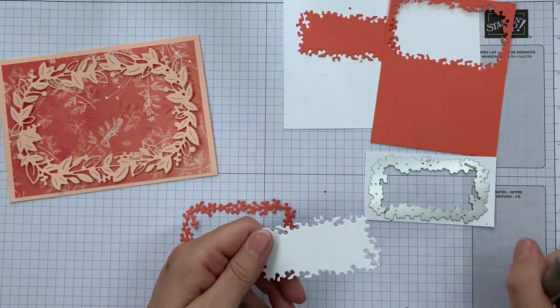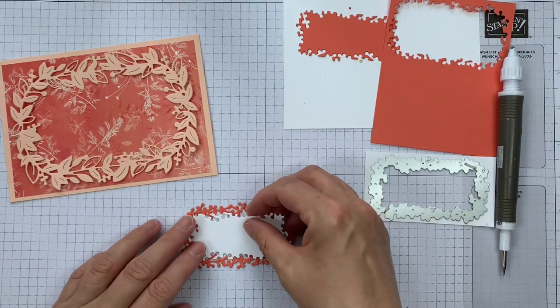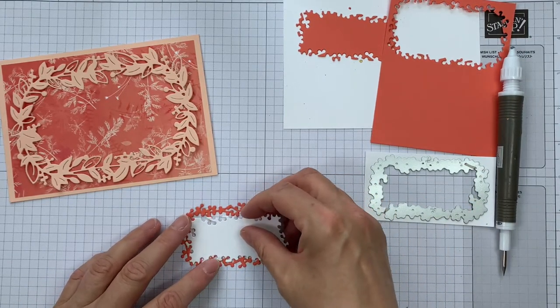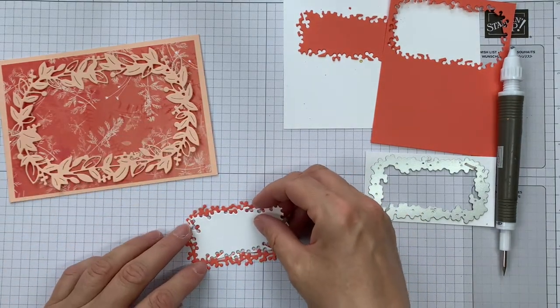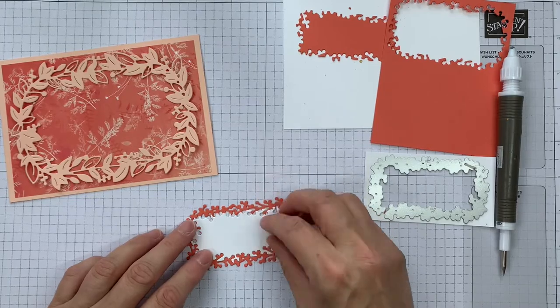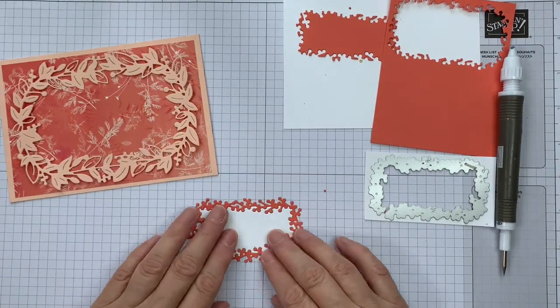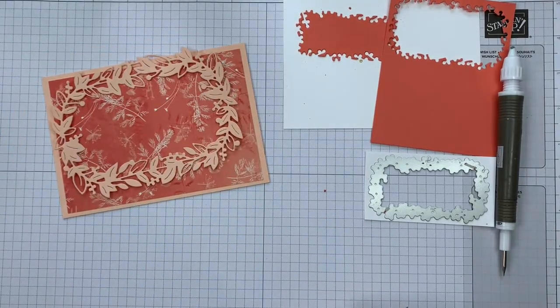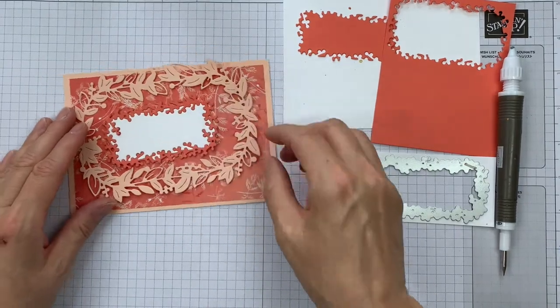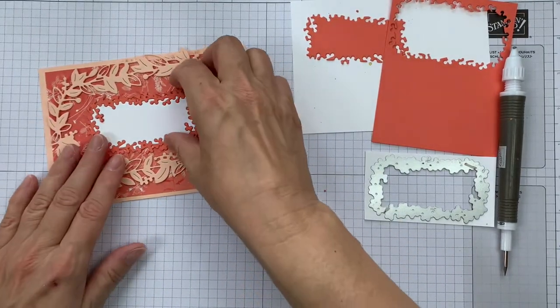So this is our Basic White piece that we're going to pop into here. Not that way around, that way around. That's one trick, getting it to go the right way. And there we are. That is how it's going to go onto our card. That gives us a nice white area for stamping.